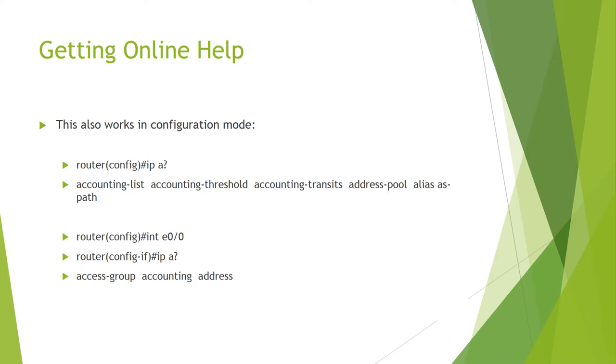Router(config)# interface ethernet 0. Router(config-if)# ip ? shows subcommands such as: access-group, accounting, address, and others.